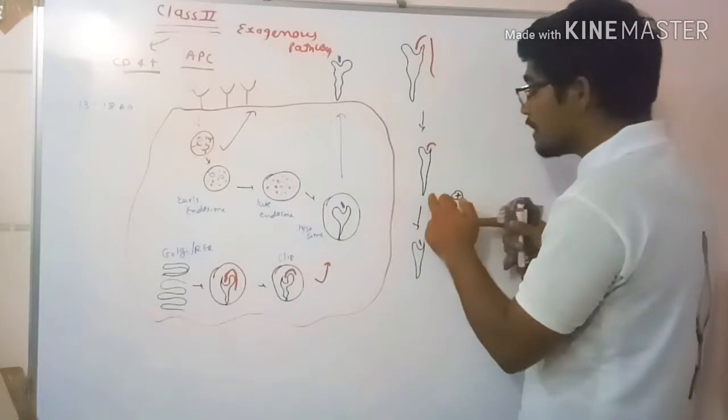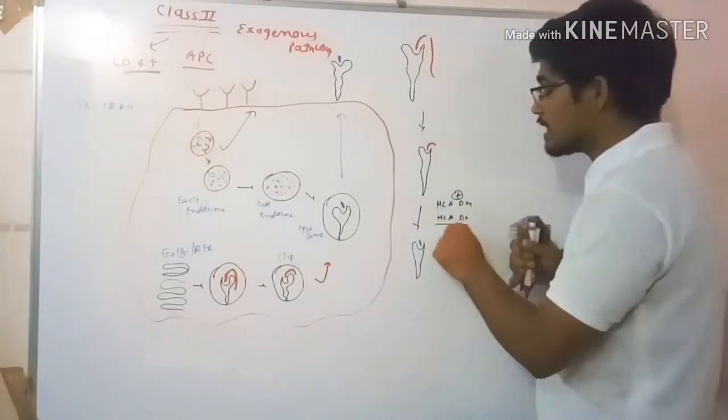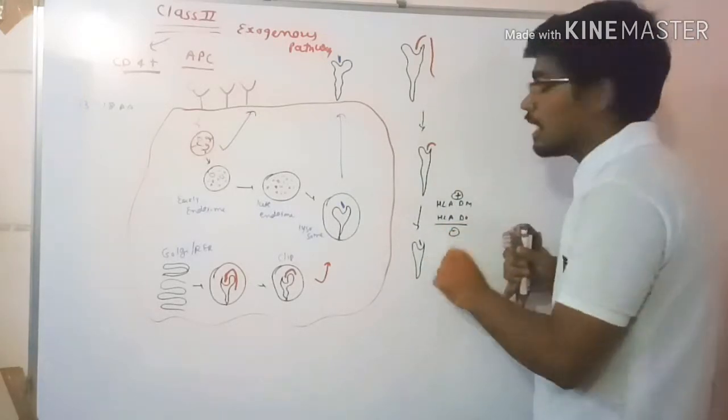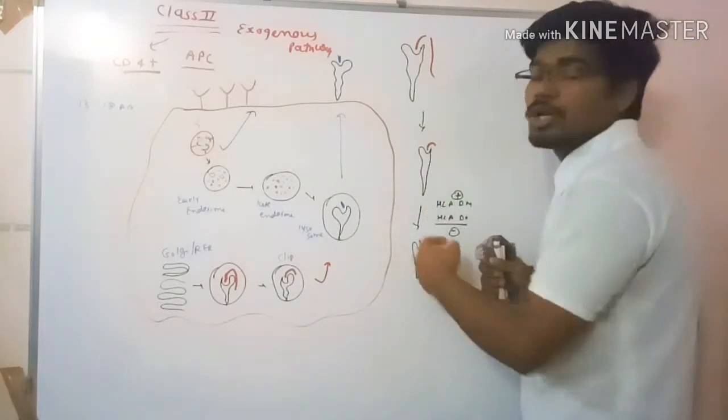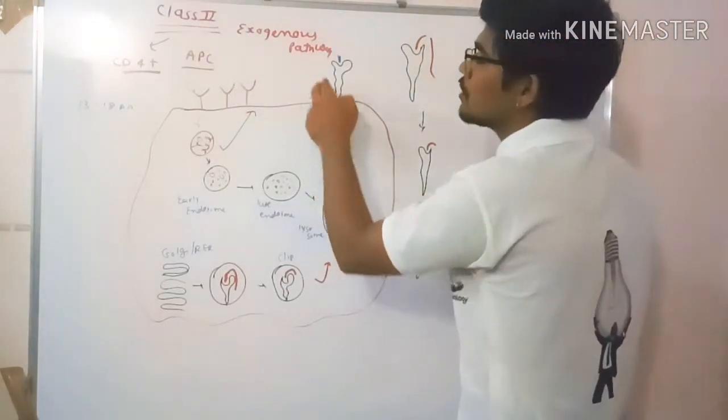These are HLA-DM and HLA-DO. HLA-DO is a negative regulator while HLA-DM is a positive regulator to exchange the clip to our antigenic peptide. After it forms, it's presented onto the APC cell.